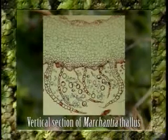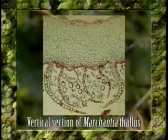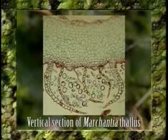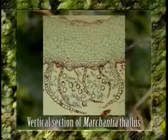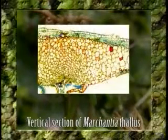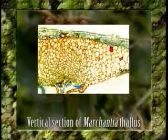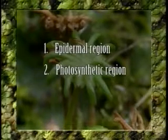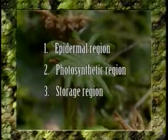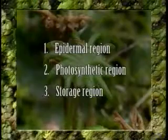When viewed in vertical section, the thallus shows a high degree of internal differentiation of tissues. It is many layers thick in the middle and a few layers towards the margins. The cells are arranged in three different regions: epidermal region, photosynthetic region, and storage region.